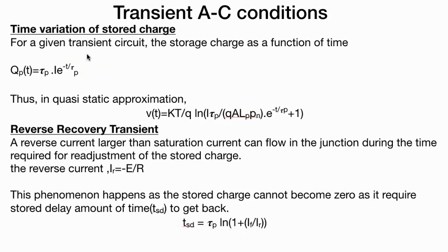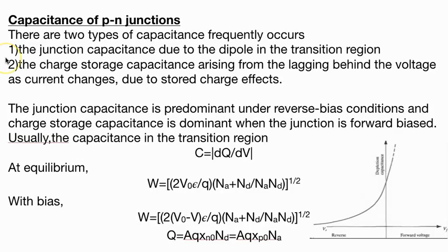The capacitance of PN junction equals dQ/dV. There are two types of capacitance: junction capacitance at the transition region and storage capacitance in the region.